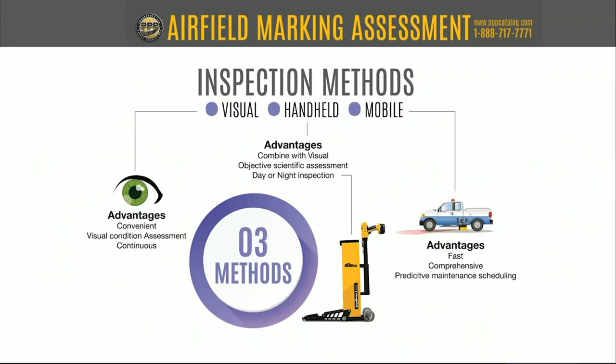Visual inspection can be done continuously — every time you're out on that runway, taxiway, or apron, you're going to be able to do a visual inspection of some kind. We'll talk more about that under management. The advantages of a handheld device are that you can combine it with the visual, so while you're there, you can use a handheld instrument.